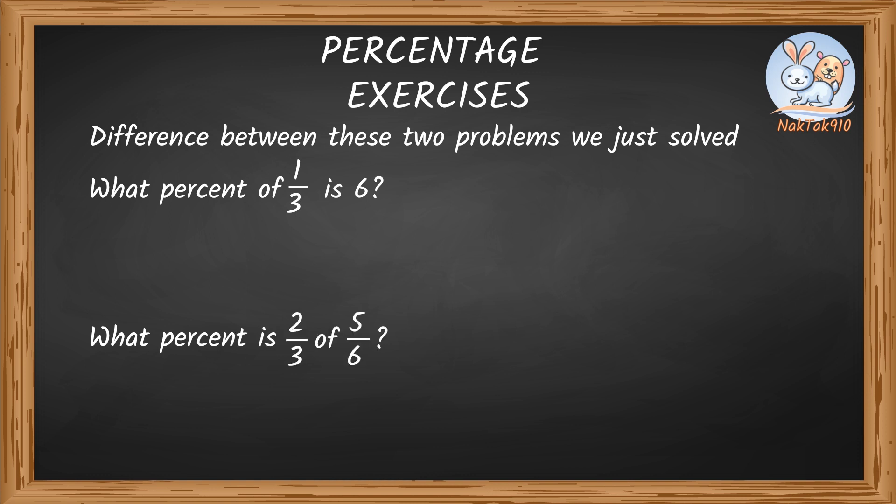In the first problem, we wrote the expression as unknown number percentage multiplied with the number 1 third to get the value of 6. In the second problem, we wrote the expression as unknown number percentage multiplied with the number 5 by 6 to get 2 by 3. Always pay attention to the details in the question carefully to get the answer right. Let's solve a few more problems for practice.